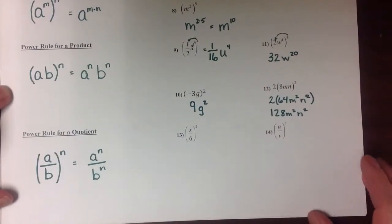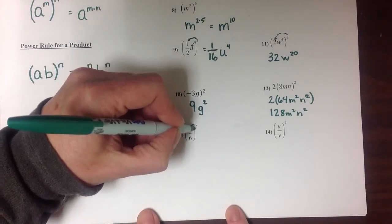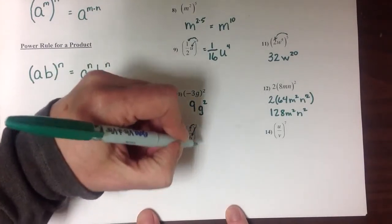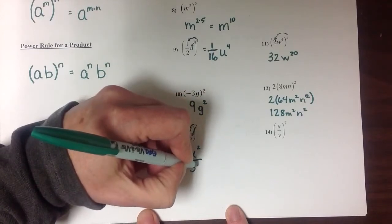Looking at a couple applications of this, if we apply the squared to the x and the 6, we end up with x squared over 36.